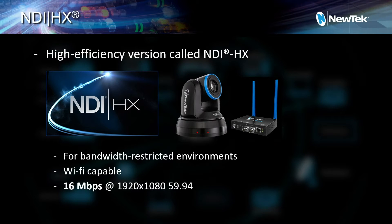This is a really important point, and I'm sure a couple of you guys have seen this stuff in the wild. NDIHX — this is another version of NDI we make. It's our high efficiency protocol. It runs at about a little over 15 meg for a 1080p. So that's about a tenth of the total bandwidth.